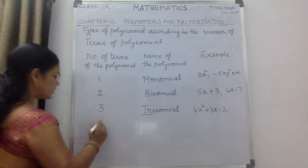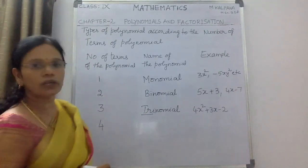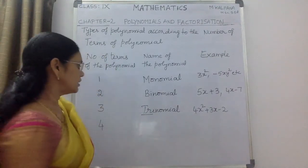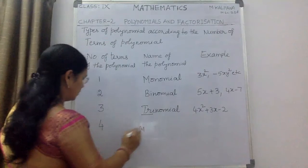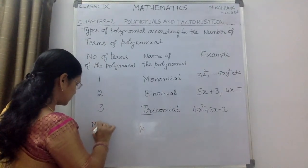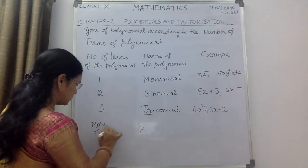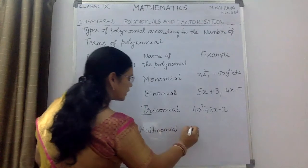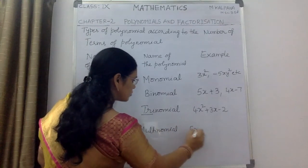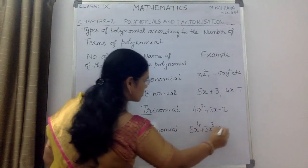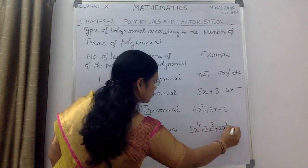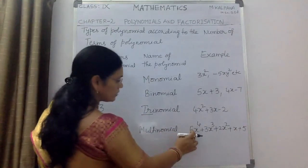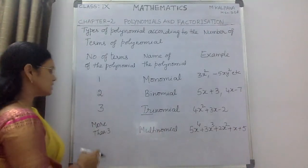If a polynomial has more than three terms, it is called a multinomial. Take any expression — for example, 5x⁴ + 3x³ + 2x² + x + 5. It has more than three terms — in fact, there are 5 terms here, so this can be named as a multinomial.